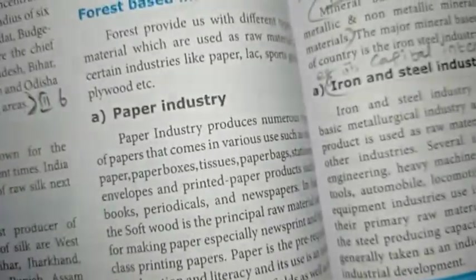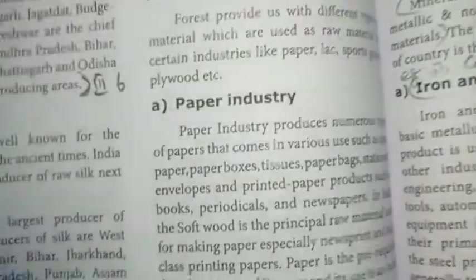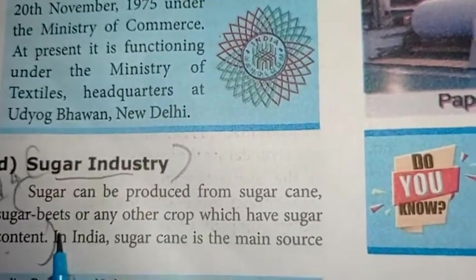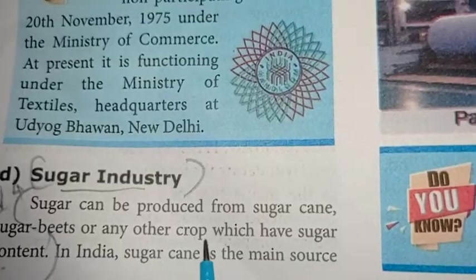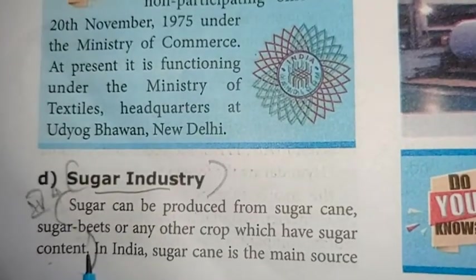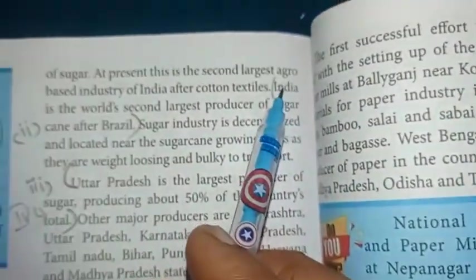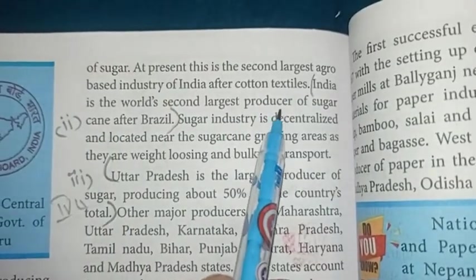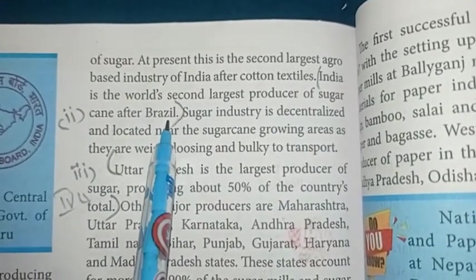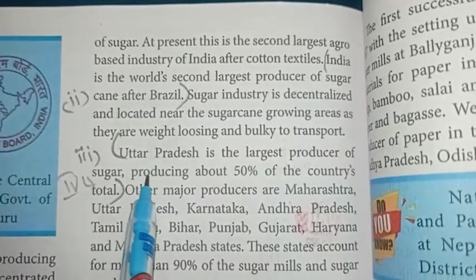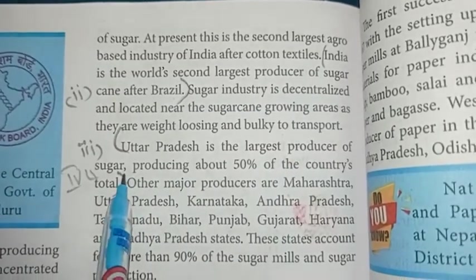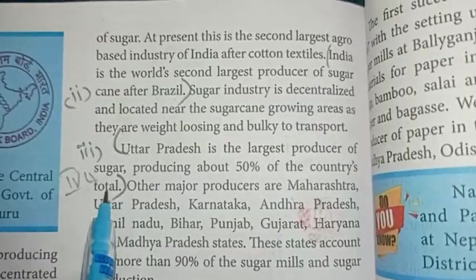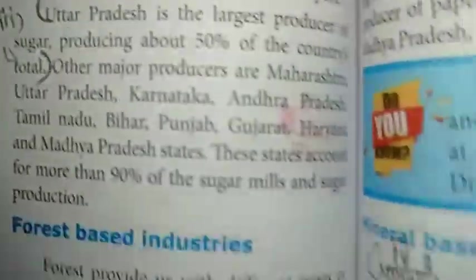Sugar industry, page number 180: sugar can be produced from sugarcane, sugar beets or any other crop with sugar content. India is the world's second largest producer of sugarcane after Brazil. Uttar Pradesh is the largest sugar producing state, contributing about 50% of the country's total.